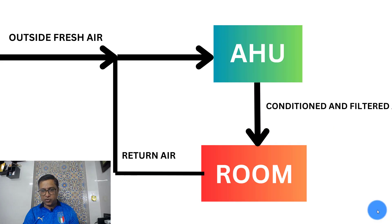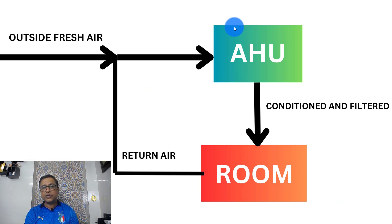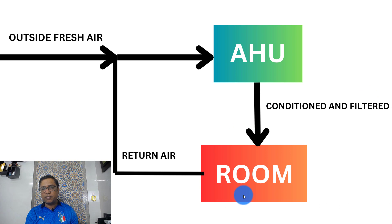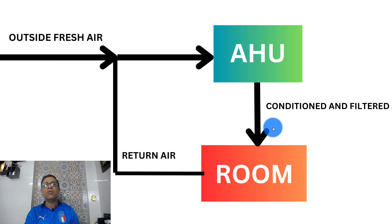Let us look at the AHU case. In case of AHU, what happens is I get outside air which goes to the AHU. The AHU pulls it along with the return air coming from the conditioned rooms, and that becomes a mixture. Here it gets conditioned and filtered and it is supplied to the room. From the room the return air comes back, the outside fresh air gets added, and this is how AHU works.